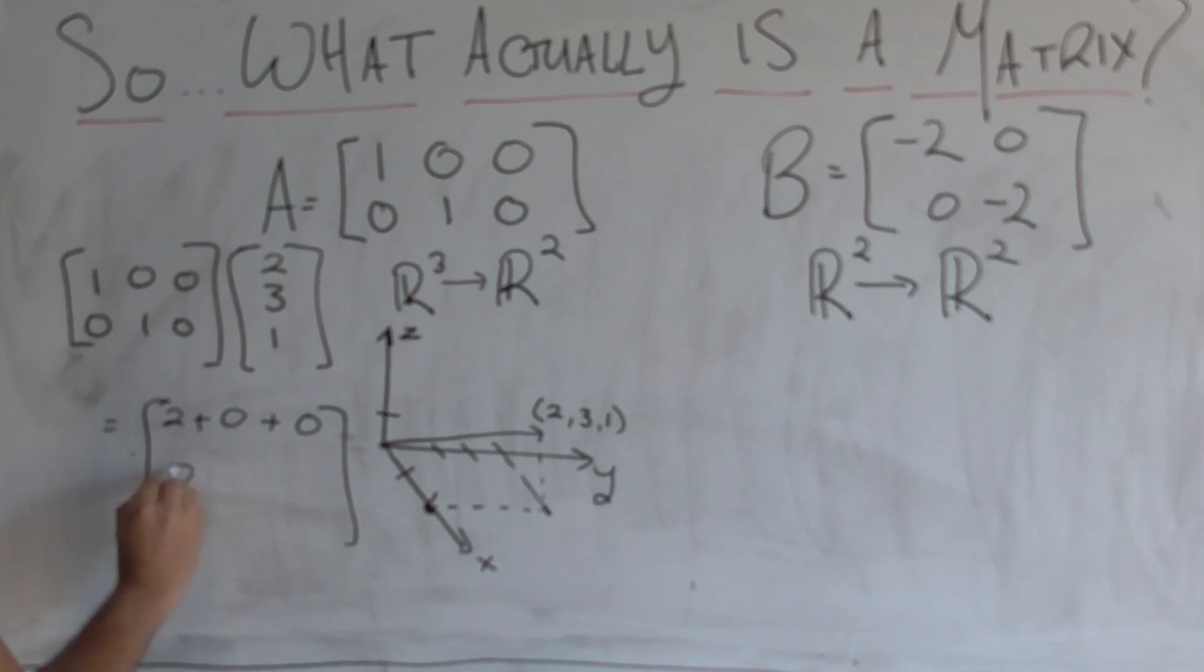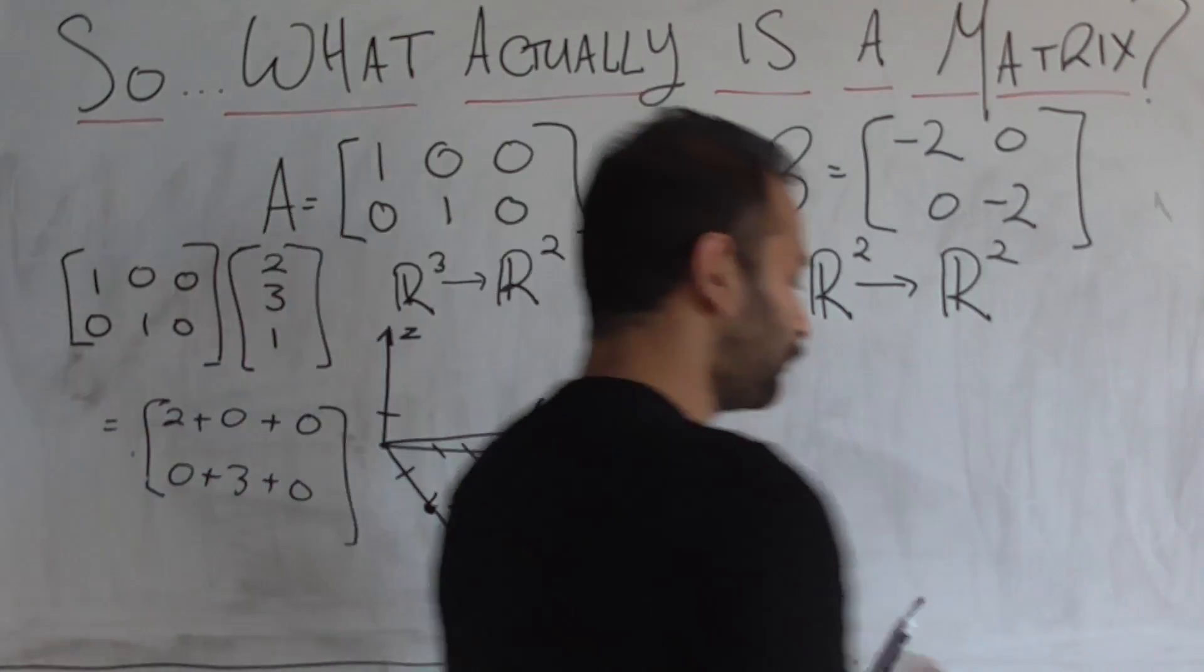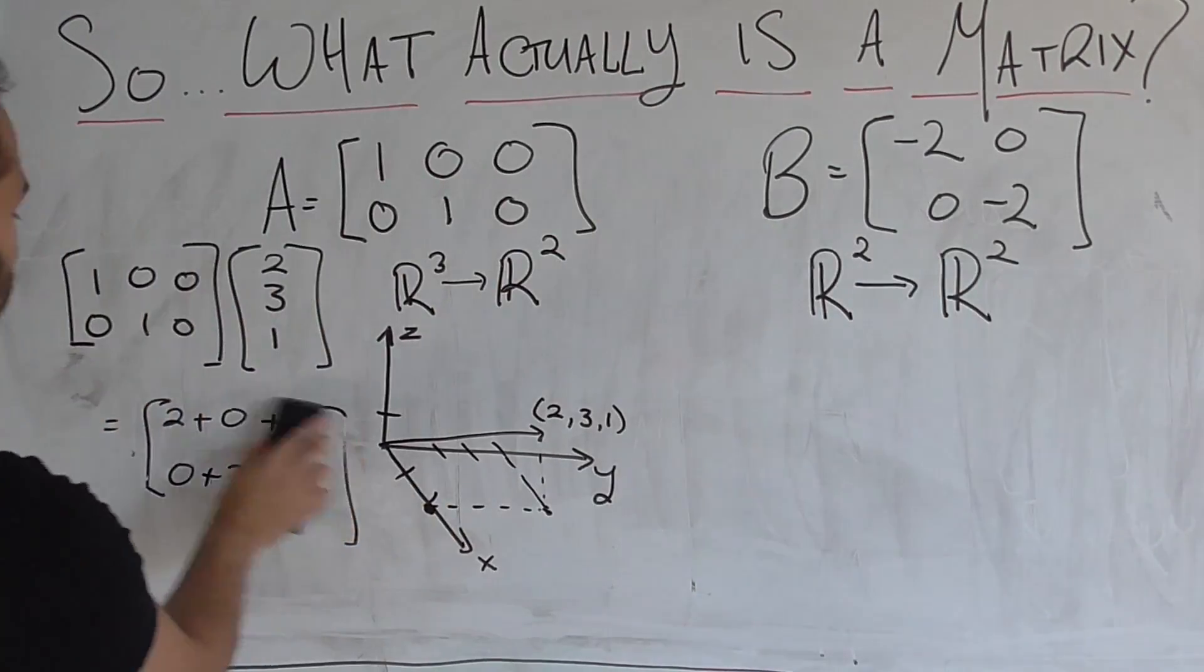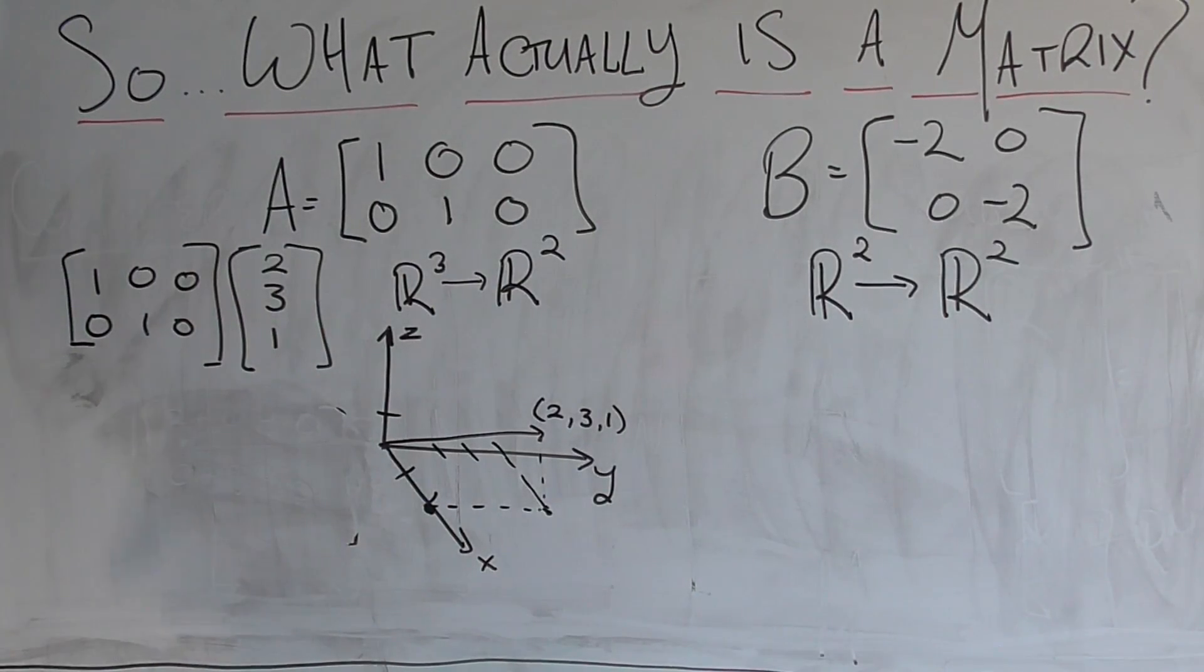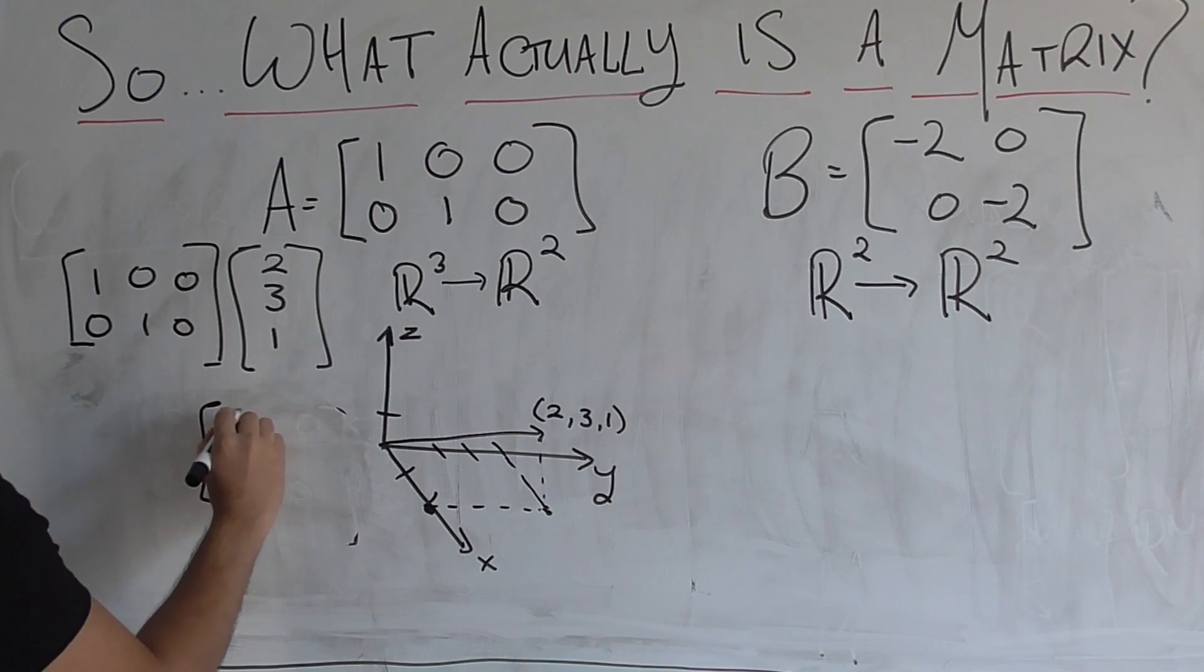And then we do zero times two is zero, plus one times three is three, plus zero times one is zero. So we get the result as two comma three. So I'm going to write that right here.